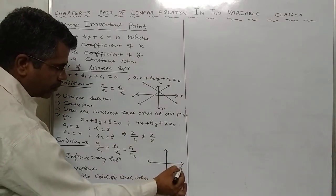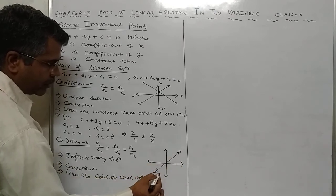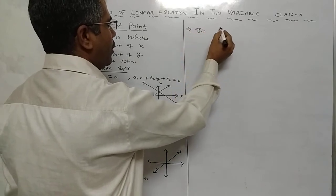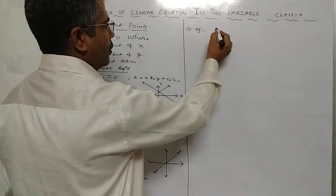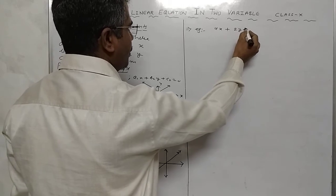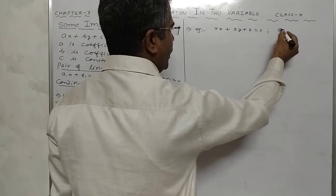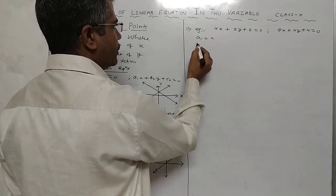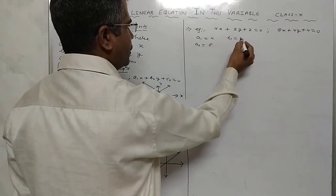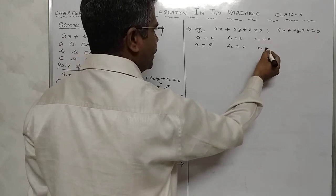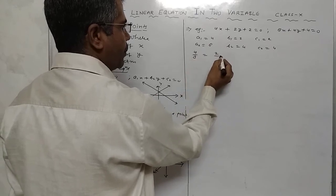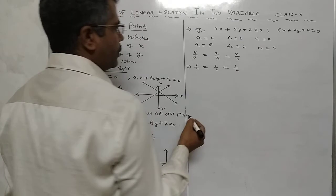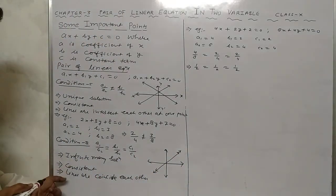Example: 4x plus 2y plus 2 equals to 0, and 8x plus 4y plus 4 equals to 0. On comparing: a1 equals to 4, a2 equals to 8, b1 equals to 2, b2 equals to 4, c1 equals to 2, c2 equals to 4. We write 4 upon 8, 2 upon 4, 2 upon 4, which gives 1 upon 2, 1 upon 2, 1 upon 2. So we say infinite many solutions — consistent — and the lines coincide each other.